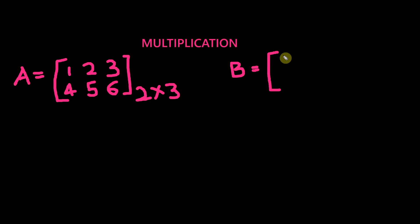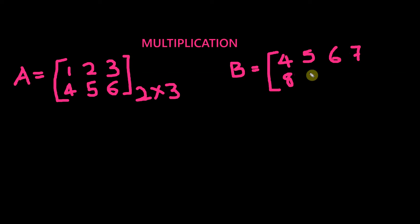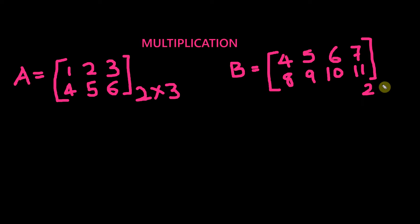Let's define the second matrix named B which has 4, 5, 6, 7 in the first row and 8, 9, 10, 11 in the second row. So that's a total of two rows and four columns.